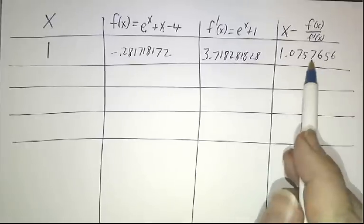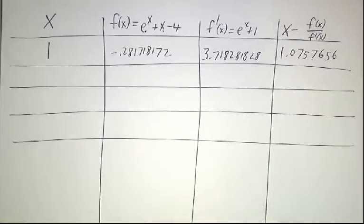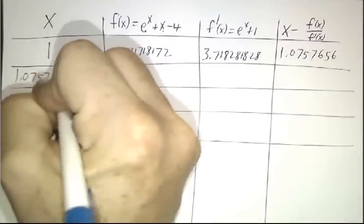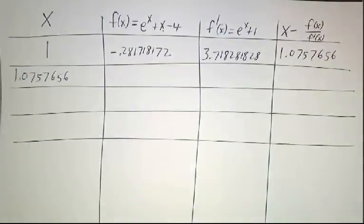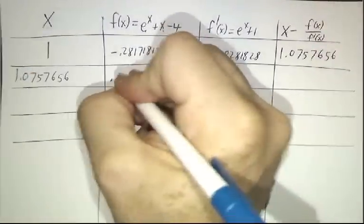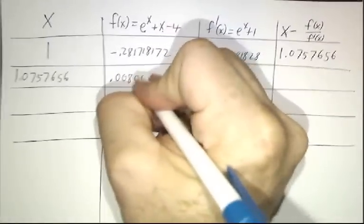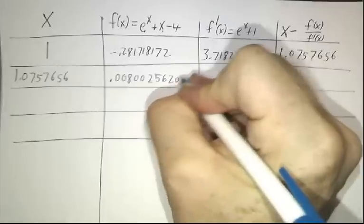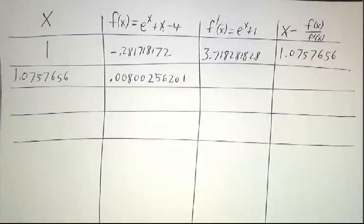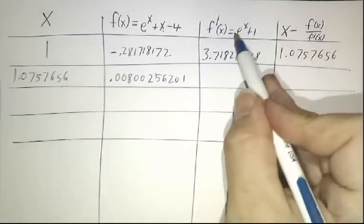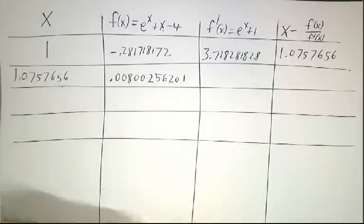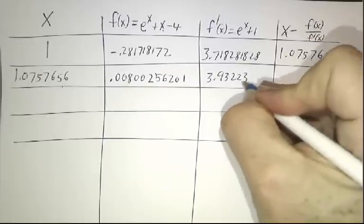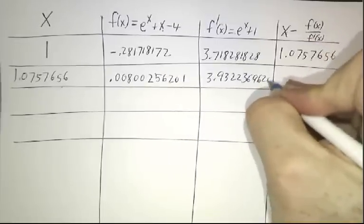I claim this is closer to the correct answer than this is. If we want to get something that's closer still, we figure out what f of that is. And that winds up being 0.00800256201. You plug this number into this function, you get 3.93223696202.